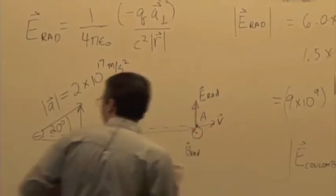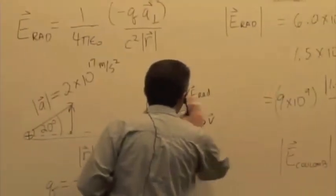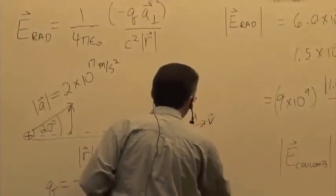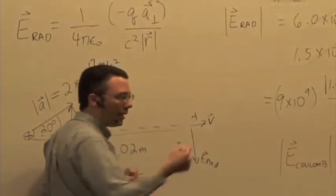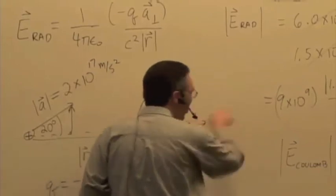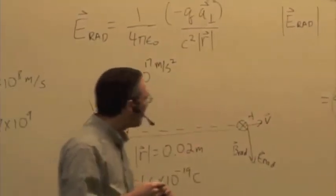If it had been a proton, let's say it was a positive charge, then E_rad would be down, and B_rad would have to point into the board to get you the same direction of propagation because you know it's coming from that charge.